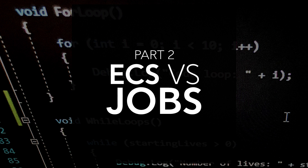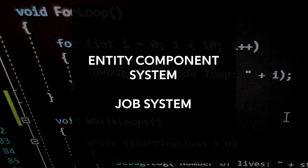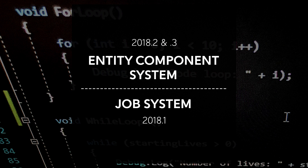Part 2: ECS versus the job system. When people talk about ECS and Unity, they're typically actually talking about three things: the Entity Component System, the job system, and the burst compiler. The burst compiler is kind of its own thing, so we're not going to look at it right now. ECS and the job system work together and have some things in common, but they are actually two separate systems. Unity rolled out the job system with Unity 2018.1, and ECS arrived in 2018.2.